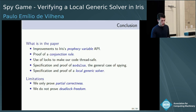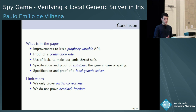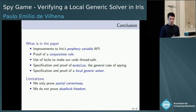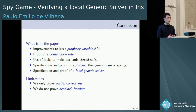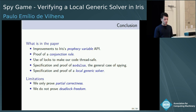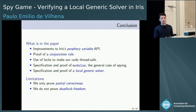To conclude, the paper contains improvements to the prophecy variable API, a proof of the conjunction rule, discussion about using locks to make the local generic solver concurrent and thread-safe, as well as the specification and proof of modulus — the general case of spying — and the specification and proof of a local generic solver. A limitation is that we only prove partial correctness: we do not prove termination and do not exclude the case of deadlocks.